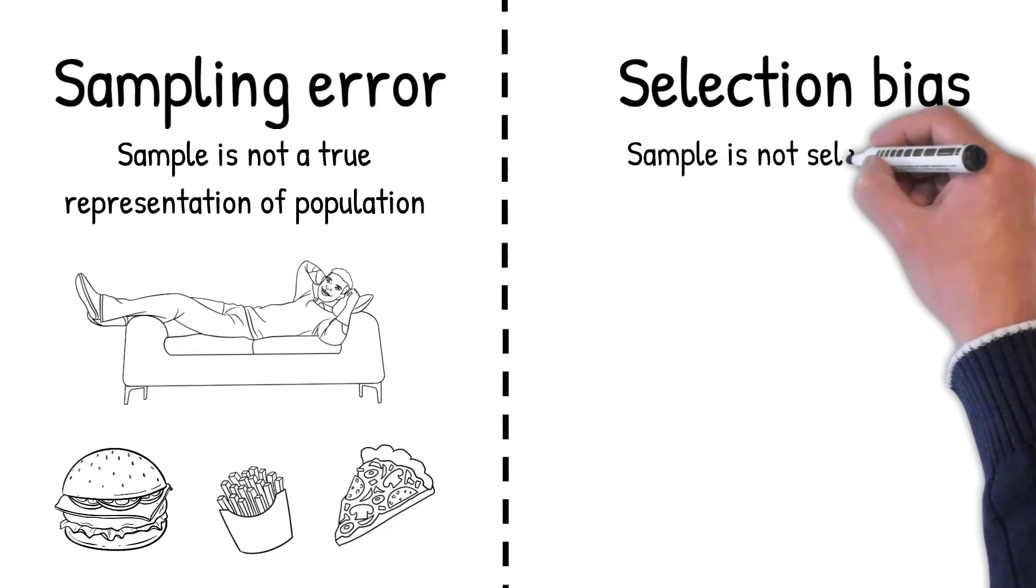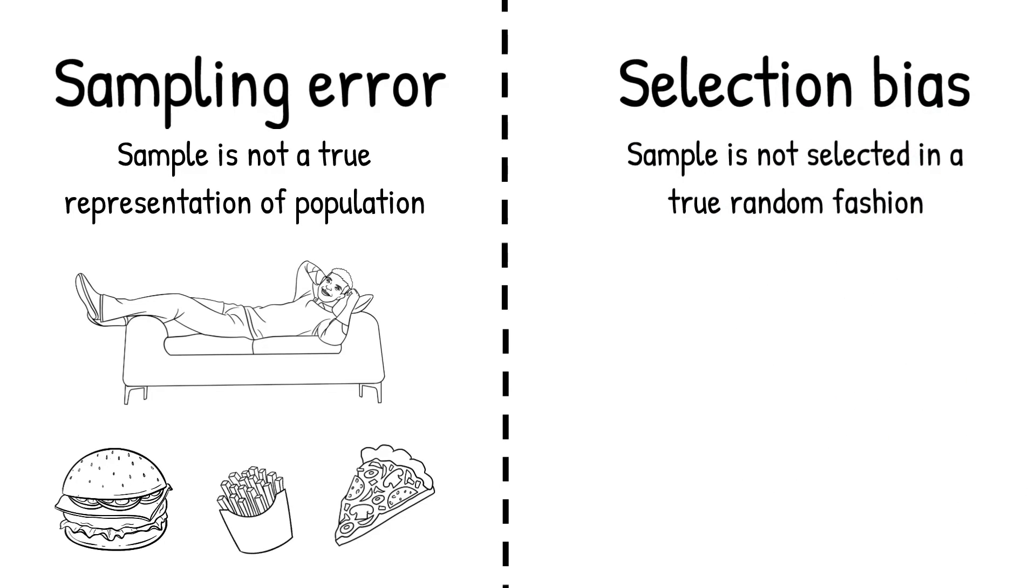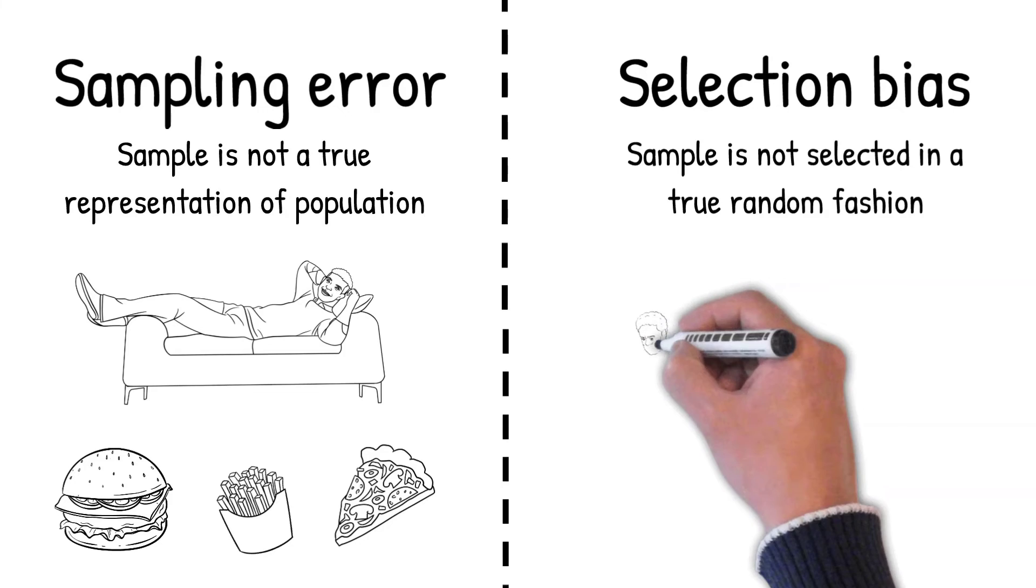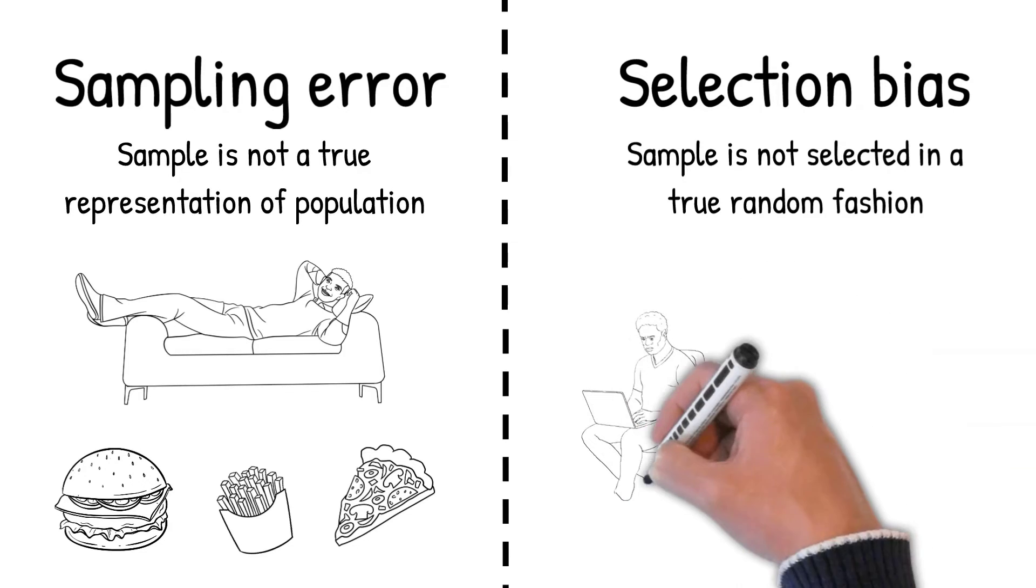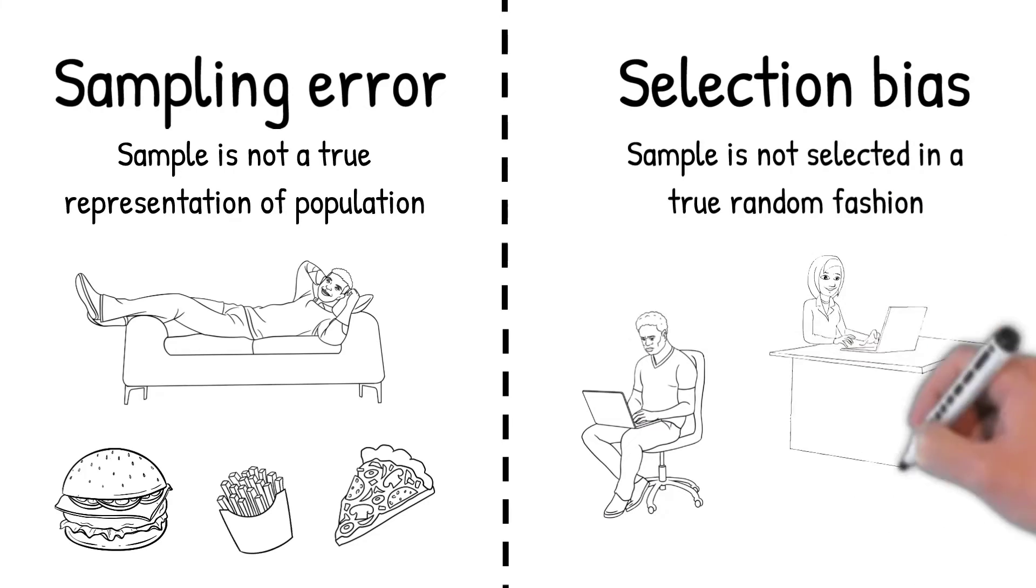Selection bias occurs when the sample is not selected in a true random fashion. Instead, certain people may be preferentially recruited. For example, let's say for our study we advertised it through Facebook. This means only people who use Facebook will be recruited, whereas those who do not have a Facebook account will be ignored. This is known as selection bias.